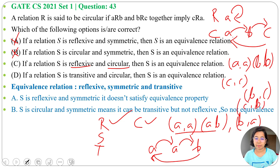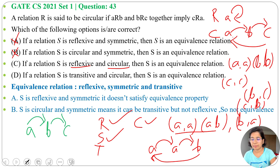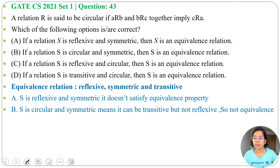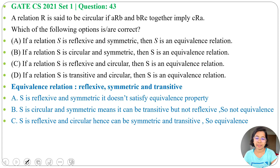Now checking transitivity: AB and BC are given. From circular, CA is related. By symmetry, AC can also be related. So AB and BC implies AC — it is transitive. Hence from reflexive and circular, we can derive that the relation is symmetric and transitive. Therefore option C is an equivalence relation.